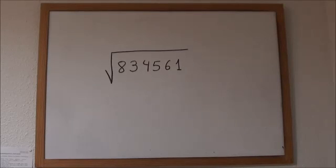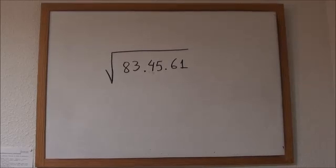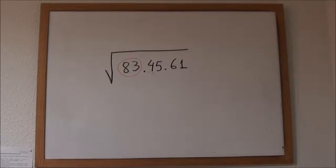We start by splitting the number in groups of two digits, starting from the right and ending on the left. And now we focus on the first two digits on the left. We have to find a one-digit number whose square gets the closest to 83. In this case, it's 9, because 9 squared is 81.